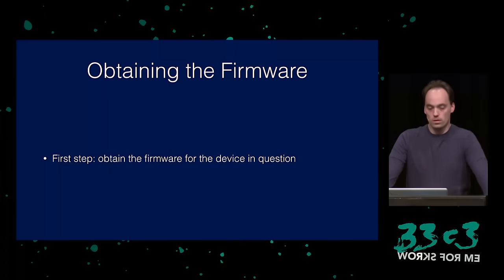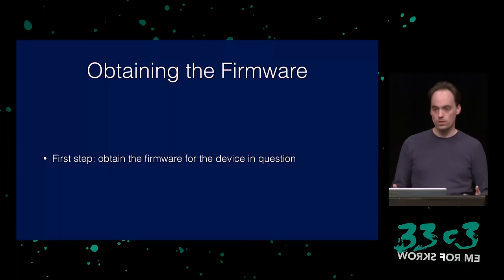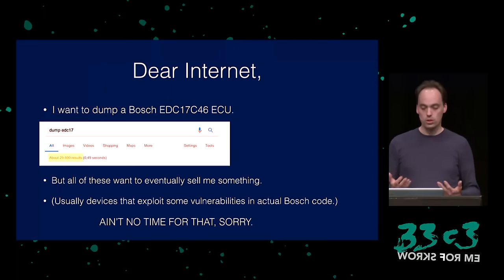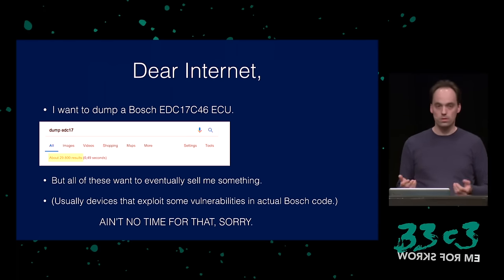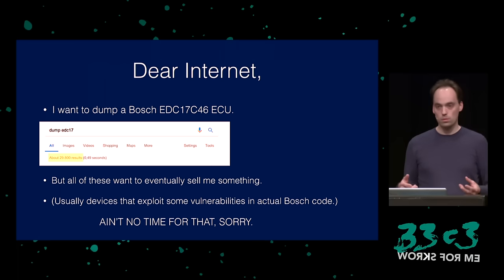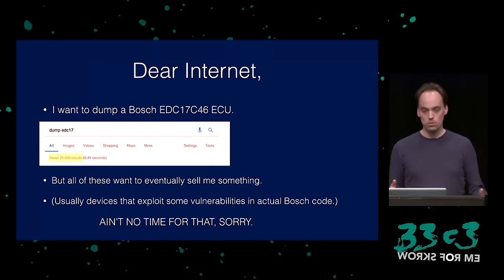The first step when having a piece of software that does not always do what people think it does is: obtain a binary image of the firmware. In the case of my car, I knew it was a Bosch EDC 17, which is a Bosch ECU that a lot of cars use. I didn't know anything about ECU dumping software, so I asked Google what I need to do to dump an EDC 17. Google had a lot of answers, but usually those were chip tuners that wanted to sell me a device.